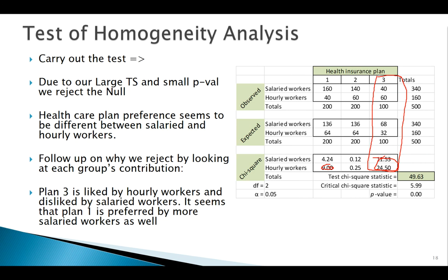The big issue seems to be with Plan 3. There's a very large contribution there — we expected 32 hourly workers but got 60, almost double what we expected. So way more hourly workers are preferring Plan 3. On the other hand, we expected 68 salaried workers in Plan 3 but only got 40. That tells us salaried workers do not prefer Plan 3. In fact, it looks like salaried workers probably prefer Plan 1 a bit more — there are far fewer hourly workers in Plan 1 than expected.